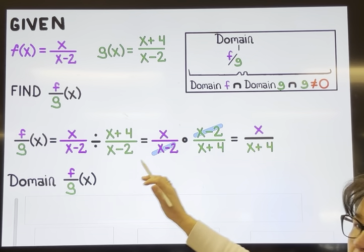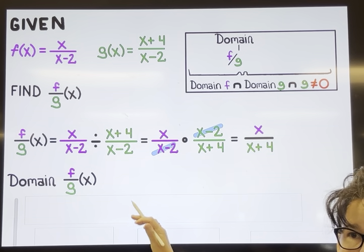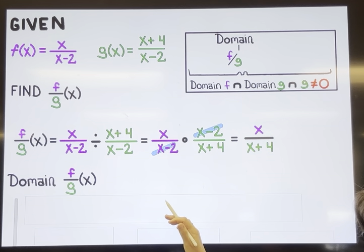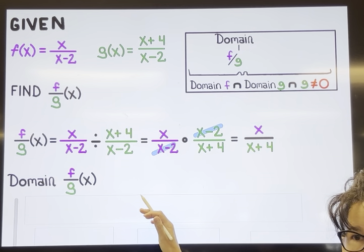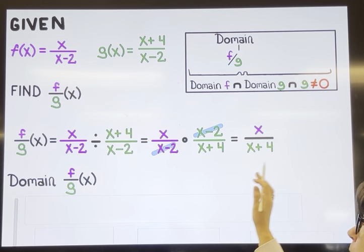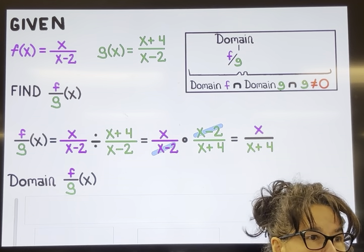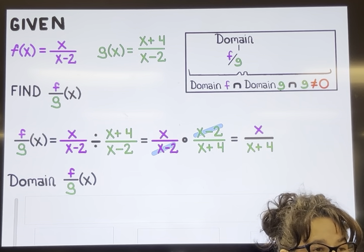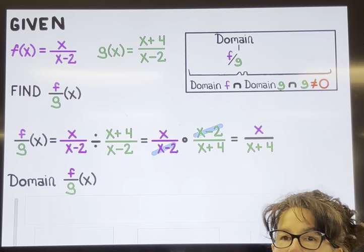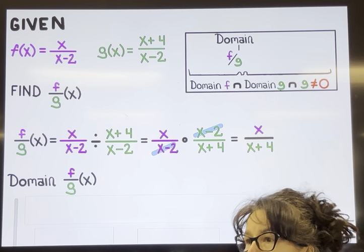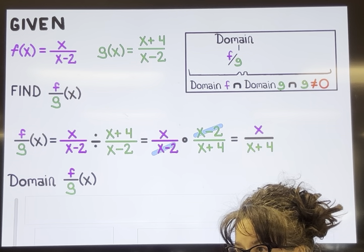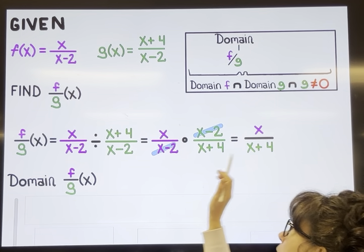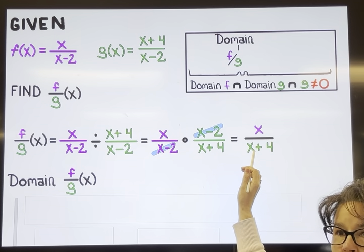Those cancelled terms become ones, and we now have the answer to f divided by g: x over (x plus 4). Now we have to find the domain of f divided by g, and it is more than just looking at this simplified equation.